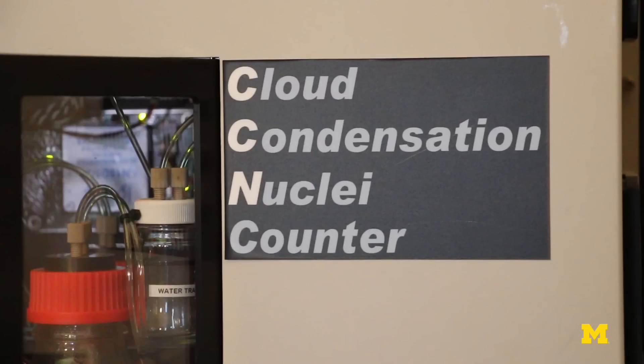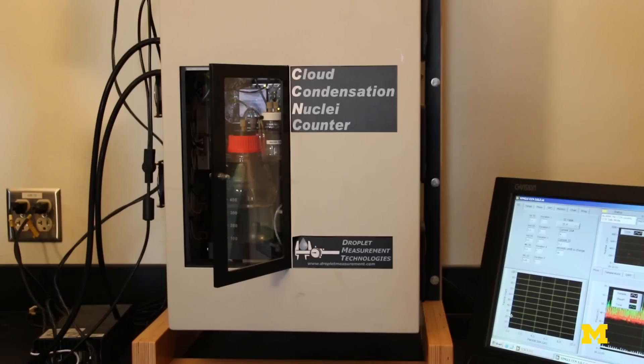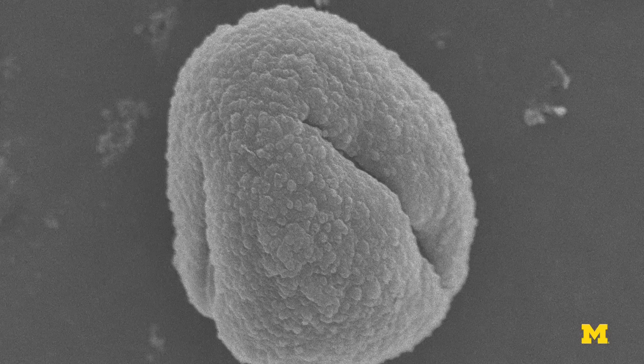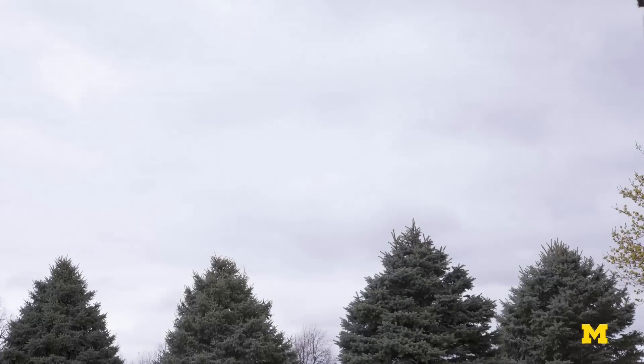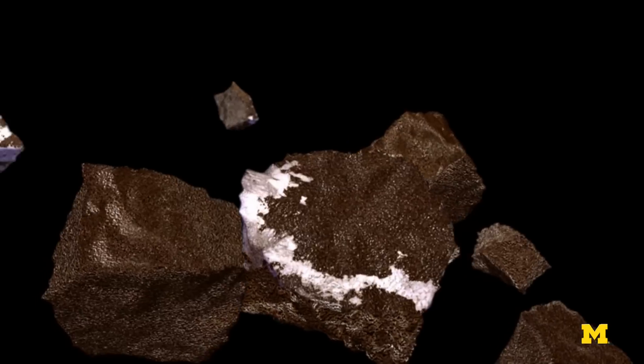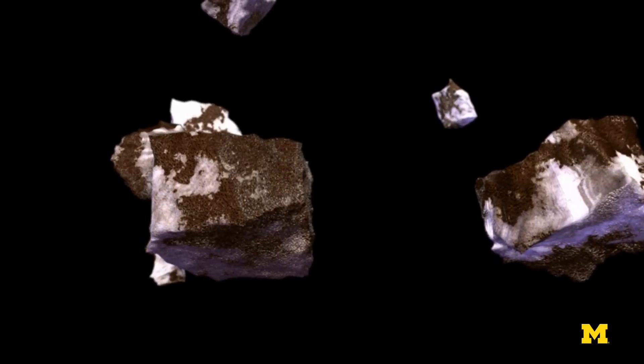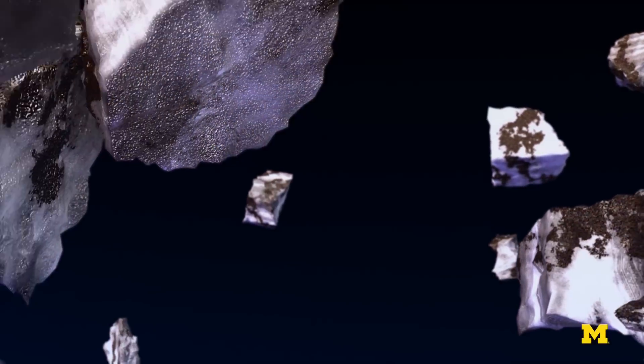We took particles and put them in what we call a cloud condensation nuclei chamber, which tests whether or not the particles could act like a good CCN if they were in the atmosphere. A cloud condensation nuclei is a small seed particle that acts as a collector for water in the atmosphere. They can be from natural sources, like pollen, or they can also be anthropogenic — caused by humans from different types of pollution.